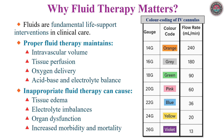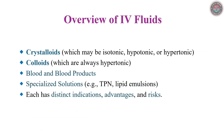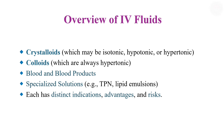IV fluids are categorized into crystalloids, colloids, blood products, and specialized solutions. Crystalloids, such as normal saline, are first line for most scenarios. Colloids, like albumin, are reserved for critical volume expansion. Blood products address specific deficits, while specialized solutions such as TPN meet unique metabolic needs.